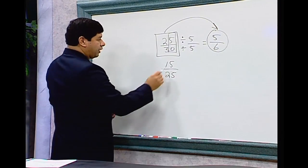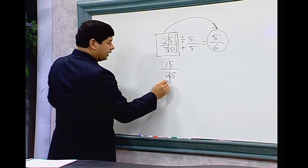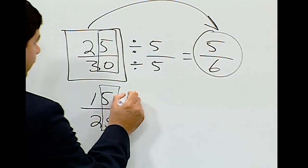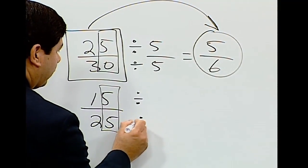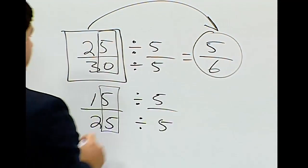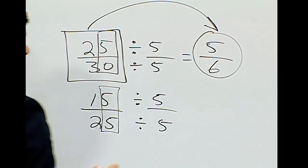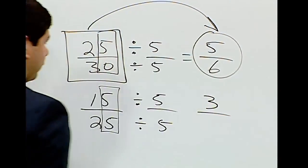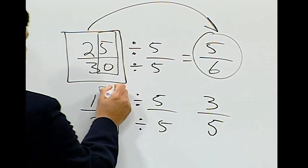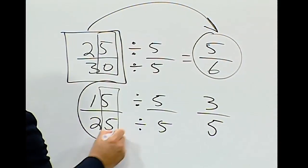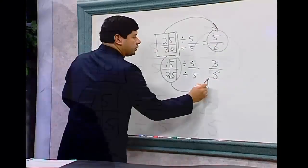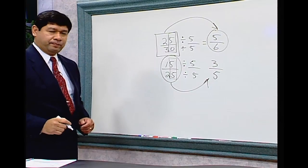Same process for 15 over 25. The last digits are both 5s, so we can divide both the numerator and the denominator by 5. 15 divided by 5 is 3, and 25 divided by 5 is 5. So 15 over 25 reduces to 3 fifths.